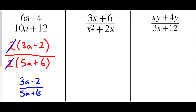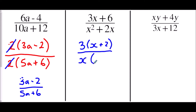In the next one we have (3x + 6) over (x² + 2x). Factorising the top: the common factor of 3x and 6 is 3, giving 3(x + 2). Factorising the bottom: the common factor of x² and 2x is x, giving x(x + 2). The brackets (x + 2) are identical top and bottom — that is our common factor — so they cancel out, and this fraction simplifies to 3 over x.